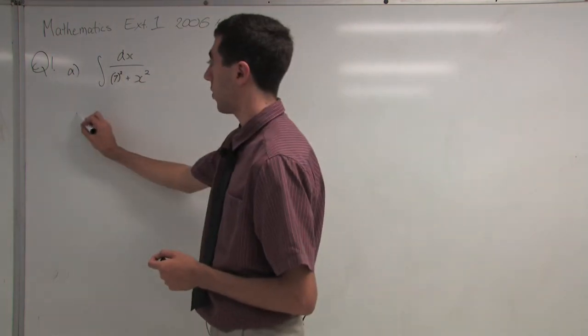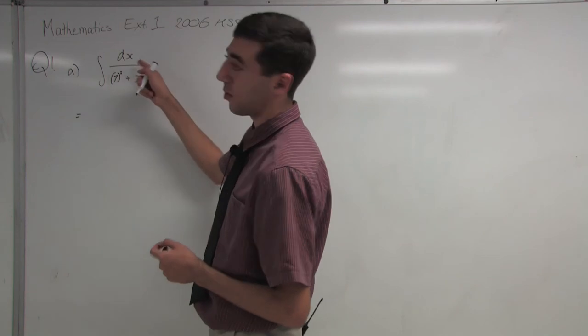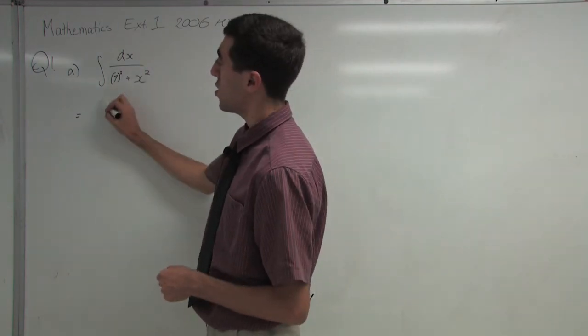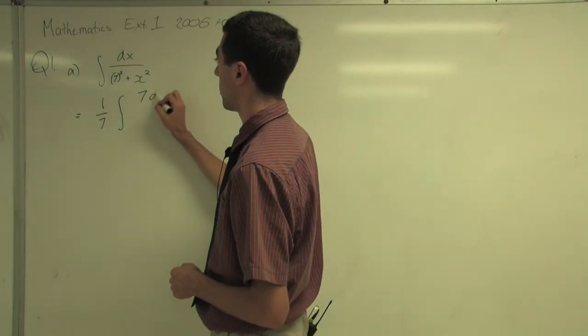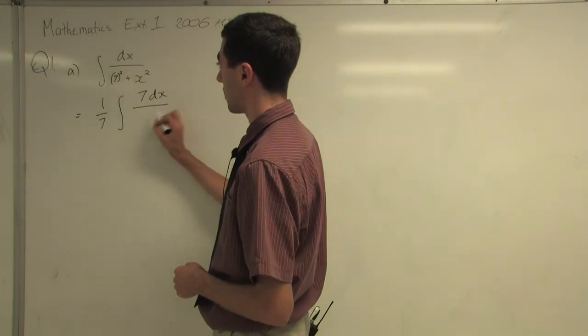Now, to continue with the next step, we have to put a 7 up the top of the numerator, but in doing so, we have to put 1 over 7 outside the integral and put a 7 up top so it stays the same.